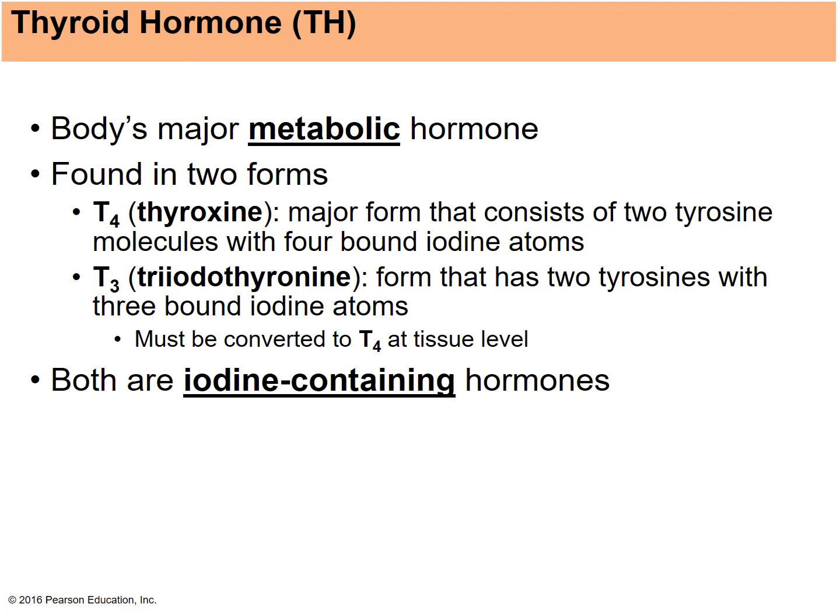Thyroid hormone is hugely involved with controlling metabolism in the body. It comes in two forms: T4, also known as thyroxine, and T3, triiodothyronine. Both involve binding iodine — T4 binds four iodines and T3 binds three. T3 will be converted to T4 at the tissue level.